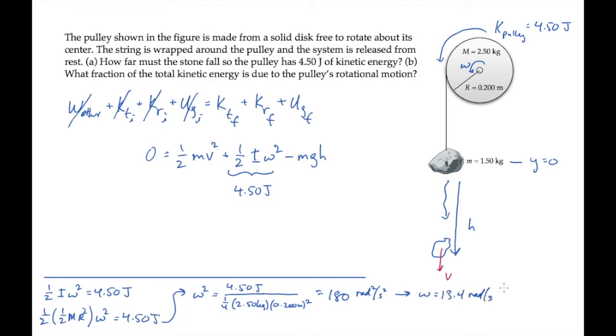Now we can solve for v sub t, the tangential speed of a point on the pulley's rim. That's r omega, and this v sub t equals the speed that the stone is falling, because the string unwinds without slipping. Calculate this to see that v sub t is 2.68 meters per second, and that's also v, how fast the stone's moving. So now we come back up and solve for the height h.